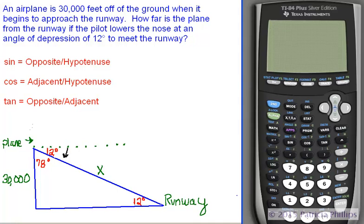An airplane is 30,000 feet off of the ground when it begins to approach the runway. How far is the plane from the runway if the pilot lowers the nose at an angle of depression of 12 degrees to meet the runway? Okay, so let's look at our diagram.